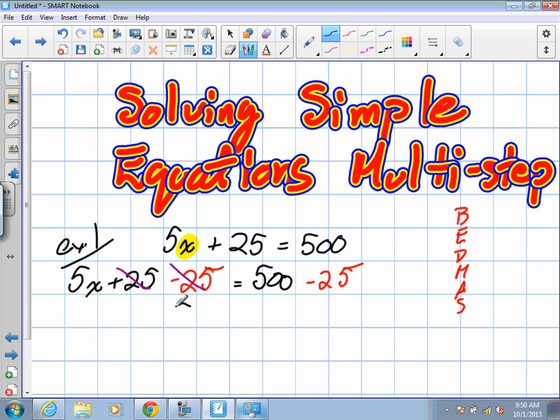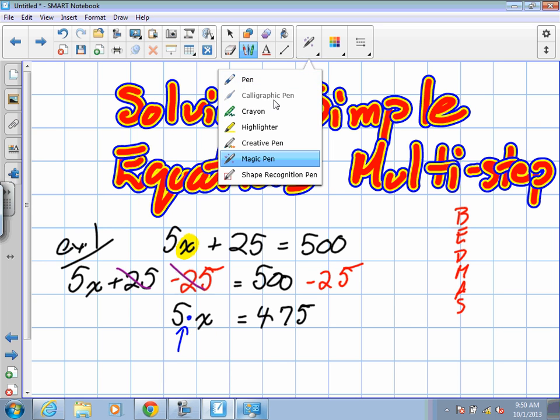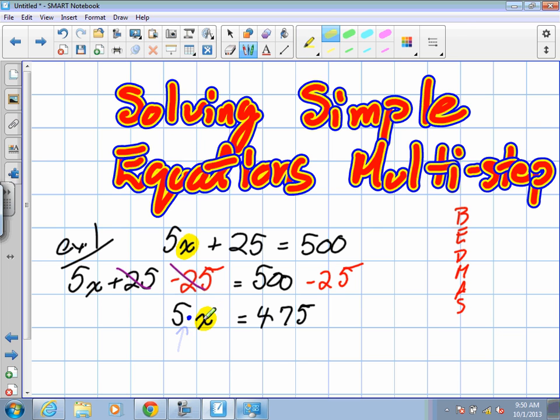So now what do we have left? This is what type of question? Multiplication. In order to move the 5, remember we're still trying to isolate for x, what operation do we have to use? That's right, we have to divide.